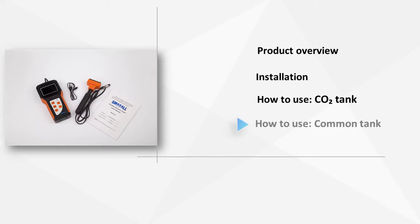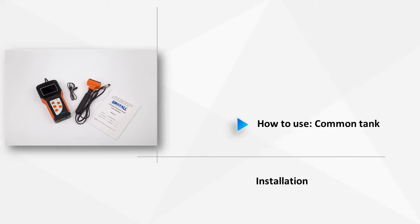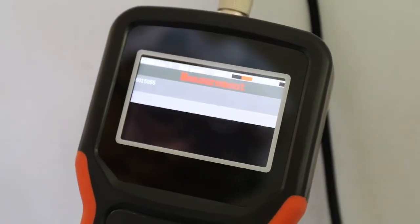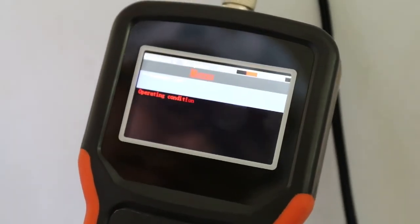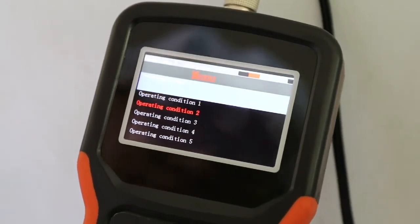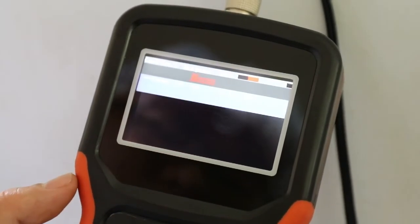Here is a demonstration of the measurement of a common tank. Select the common tank option from the main menu. We use operating condition 2 as an example. For a first time measurement, a calibration will be required.